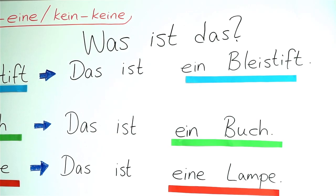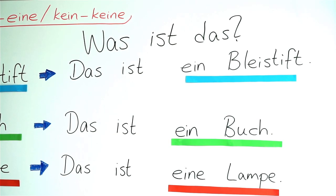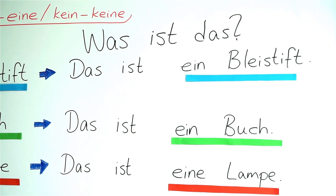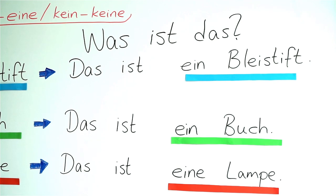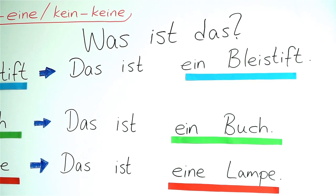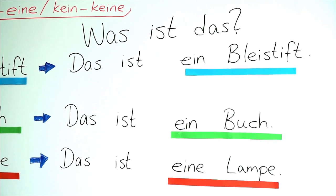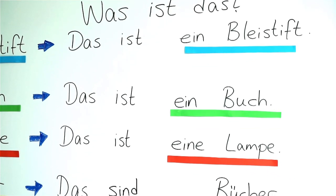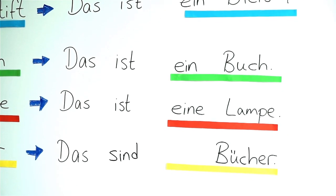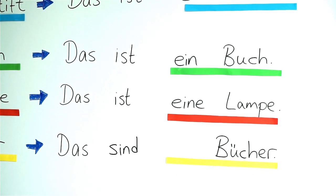Now repeat after me please: Was ist das? — Das ist ein Bleistift. Was ist das? — Das ist ein Buch. Was ist das? — Das ist eine Lampe. Was ist das? — Das sind Bücher.